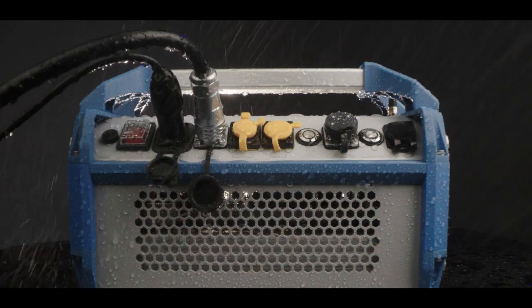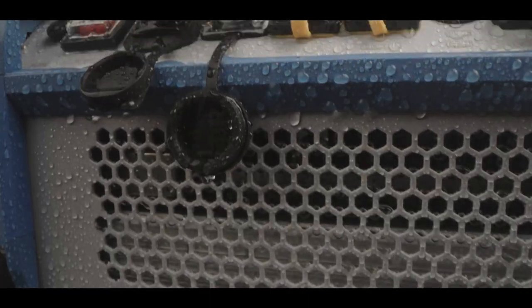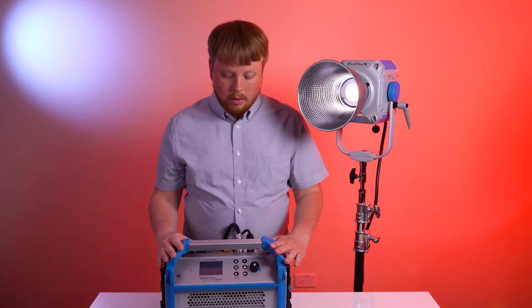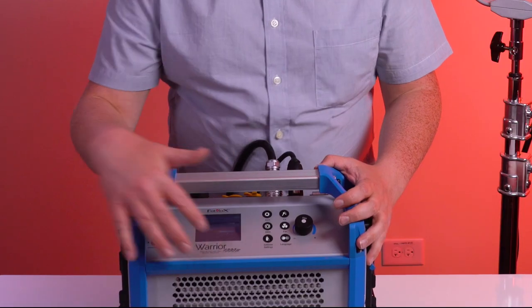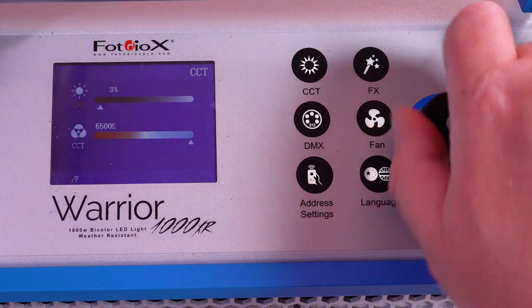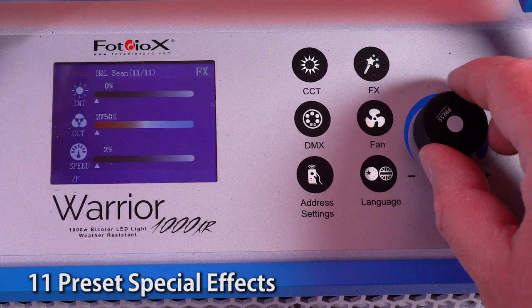This control box is also weather resistant. So if you have it out in the rain or there's a sandstorm blowing around, your control box is going to be fine. And all your controls are right here. You control the intensity of the light, the color balance, as well as built-in special effects modes.